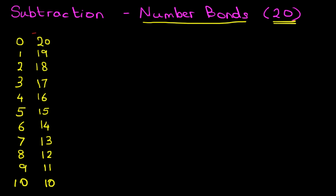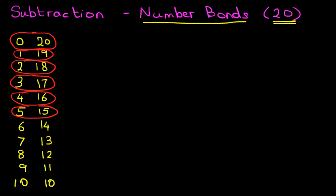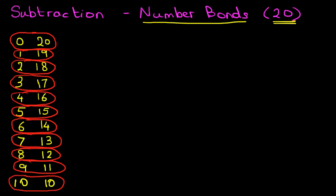Now what do you notice about the pair of numbers? It's simple. They all add to 20. 1 and 19 equals 20, 2 and 18 equals 20, and so on. We've got 7 and 13 equals 20, 8 and 12 equals 20, all the way down to 10 plus 10 equals 20. That is number bonds to 20.